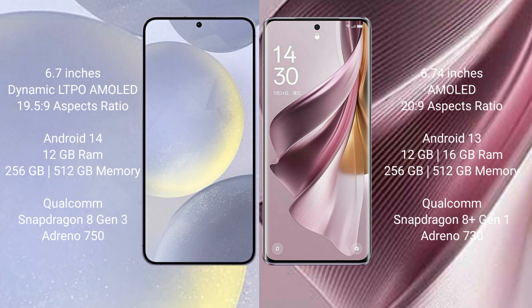The Samsung Galaxy S24 Plus runs on Android 14, while the OPPO Reno 10 Pro Plus runs on Android 13. The Samsung Galaxy S24 Plus comes with 12GB RAM and 256GB internal storage.